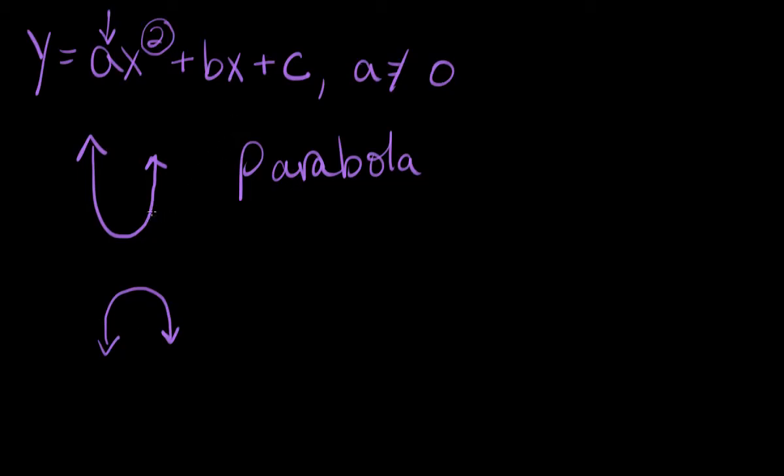Now, if you have a parabola that opens up, such as this one right here, the lowest point on your graph is known as the vertex. The lowest point on your graph is known as the vertex. If your parabola opens down, it's not the lowest point. In this case, it's the highest point of your graph that is called the vertex.